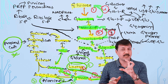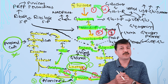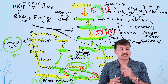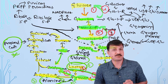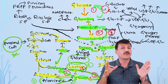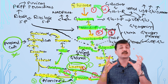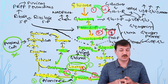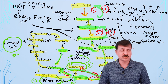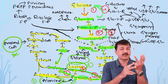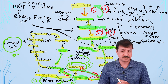For the 3 irreversible reactions in glycolysis — glucokinase/hexokinase, PFK1, and pyruvate kinase — we need 4 enzymes in gluconeogenesis: pyruvate carboxylase and PEPCK for the pyruvate kinase step, fructose-1,6-bisphosphatase for PFK1, and glucose-6-phosphatase for the first step. Together these allow conversion of alanine or lactate into glucose.